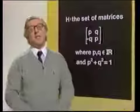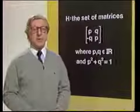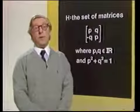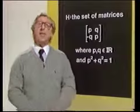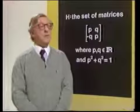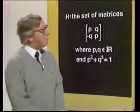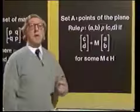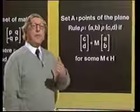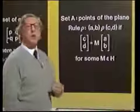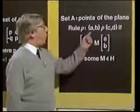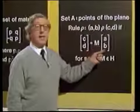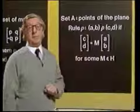This is the set of matrices H that we asked you to look at in the pre-programme work. It's the set of matrices of this special form where p and q are real numbers, and p² + q² = 1. We're going to use this collection of matrices to define a relation, and we'll see that it satisfies the three properties R, S, and T — reflexive, symmetric, and transitive — so that it's an equivalence relation. The set will be the set of points in the plane. The rule is that two points are related if you can map the first point to the second by matrix multiplication using a matrix from the set H. So the point with coordinates (a, b) is related to the point (c, d) if you can find a matrix from H such that multiplying it into the column matrix (a, b) gives you the column matrix (c, d).